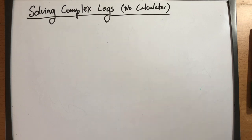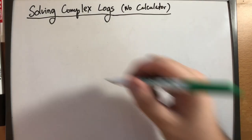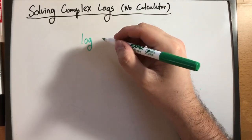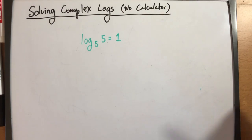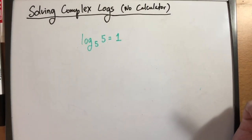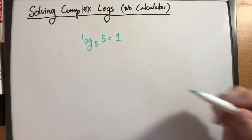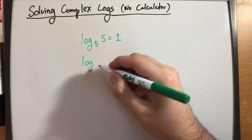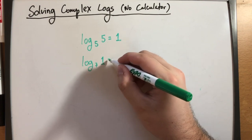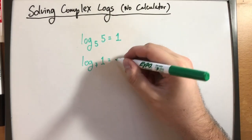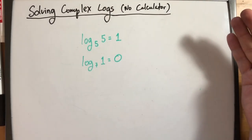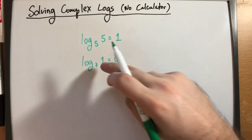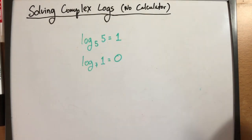Let's start very simple. We mentioned in the previous video that if the argument of the log is the same as the base, it will always be equal to 1, because 5 raised to the 1 is 5 in this example. We also talked about whatever the base is, if the argument is 1, the answer will always be equal to 0. Because the solution to a logarithm is the exponent, and anything raised to 0 will always be 1.